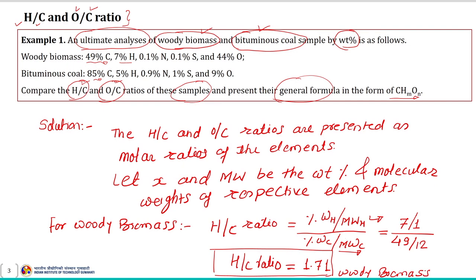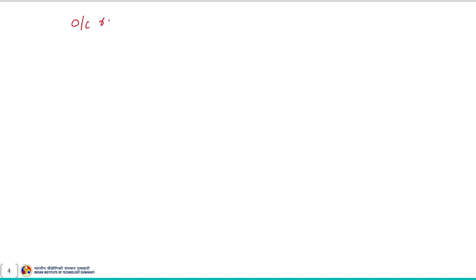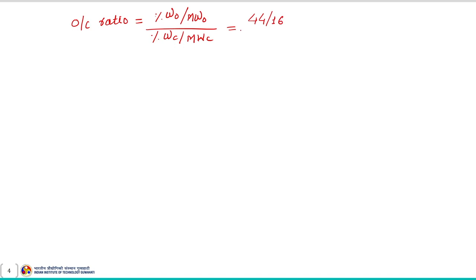Similarly, we find the O/C ratio for wood biomass. The O/C ratio is the weight percent of oxygen divided by its molecular weight, divided by the weight percent of carbon divided by its molecular weight. The weight percent of oxygen is 44% with molecular weight 16, and carbon is 49% with molecular weight 12. Solving this gives an O/C ratio of 0.67.